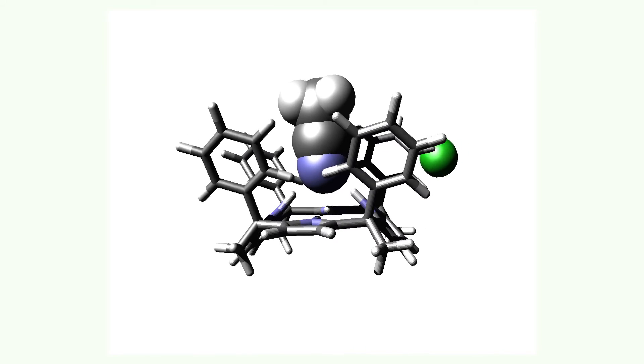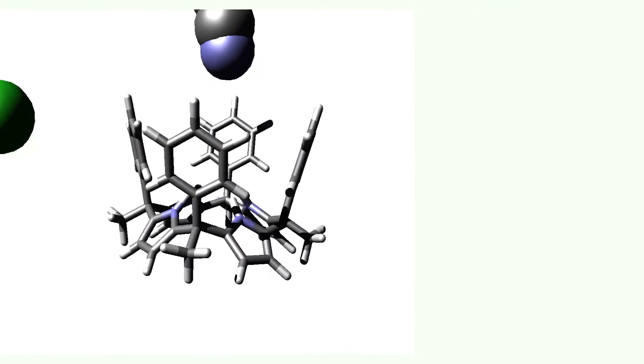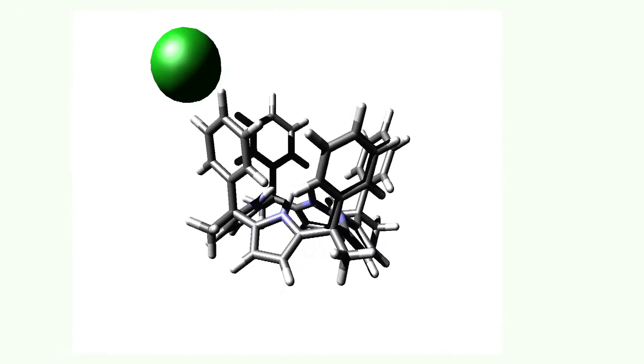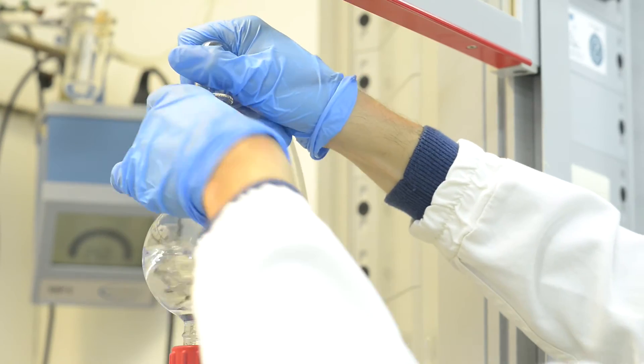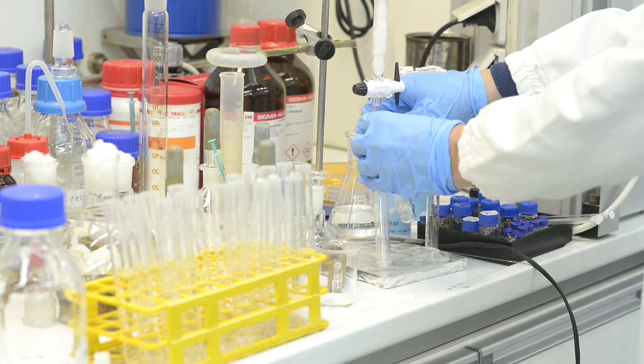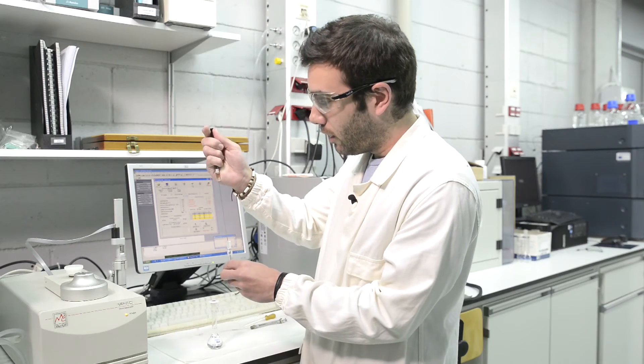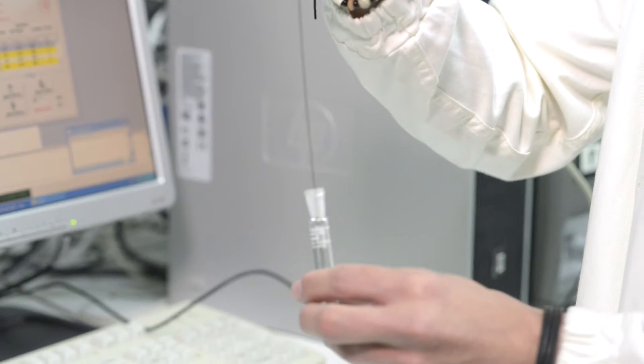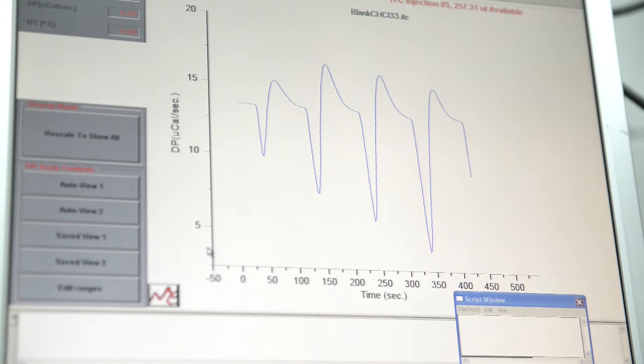The first thing we do is we design them using a computer. Some years ago we were using these models. Once it's designed, we think how to make them experimentally in the laboratory using organic chemistry or inorganic chemistry. And once we have the molecule, we go and do some physical chemical experiments to make sure that the molecule behaves the way we have predicted. And if this is the case, then we can handle this molecule to some of our collaborators and they will produce the devices.